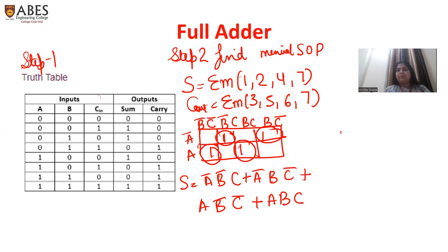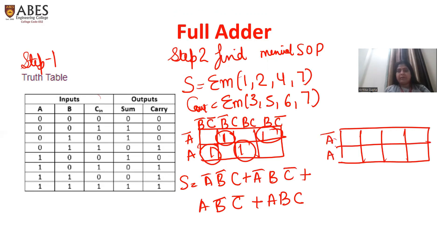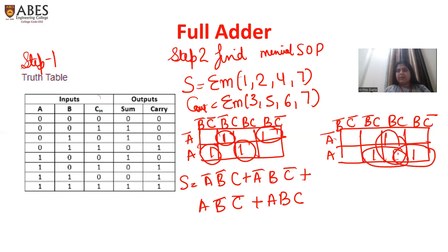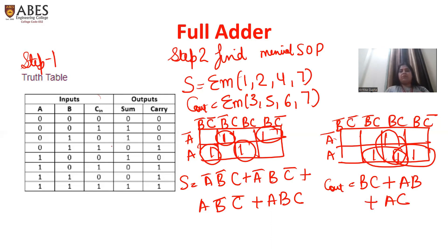Similarly, I am making the K-map for carry output. Again, a three-variable K-map, eight cells. Positions three, five, six, seven - I am getting three pairs. So the equation is: B C, plus A B, plus A C. So this is step two, that we have found the minimal SOP with the help of the truth table.